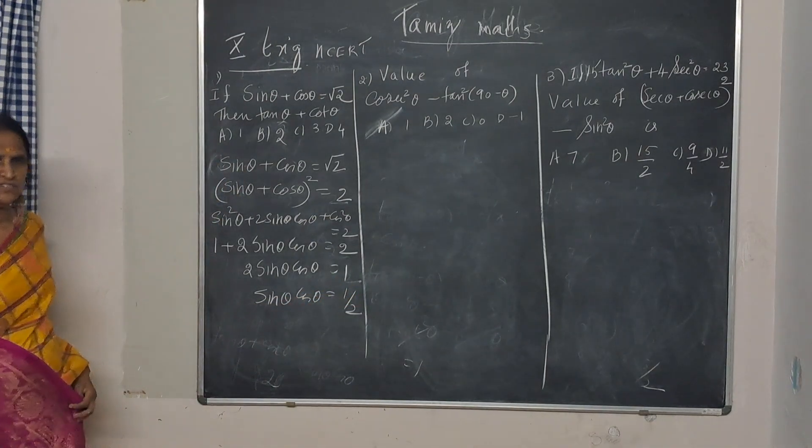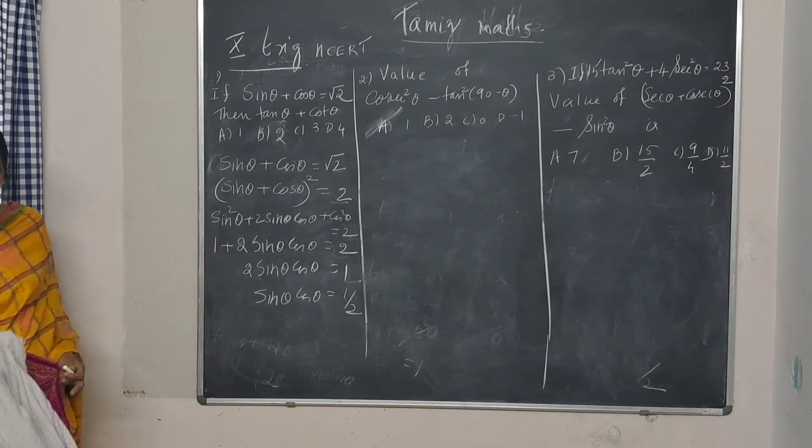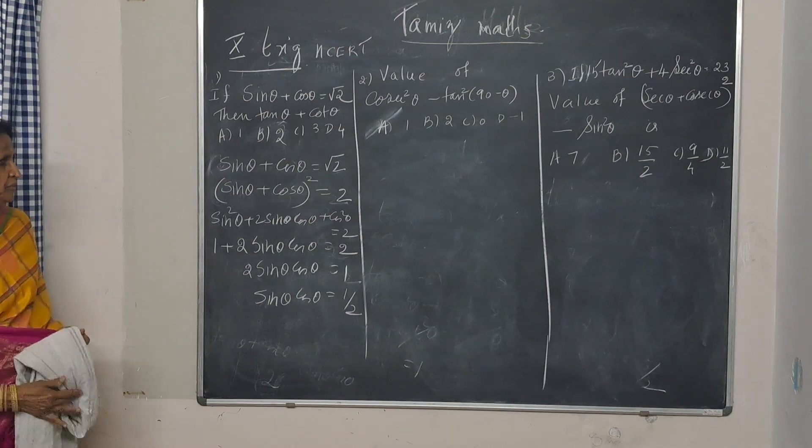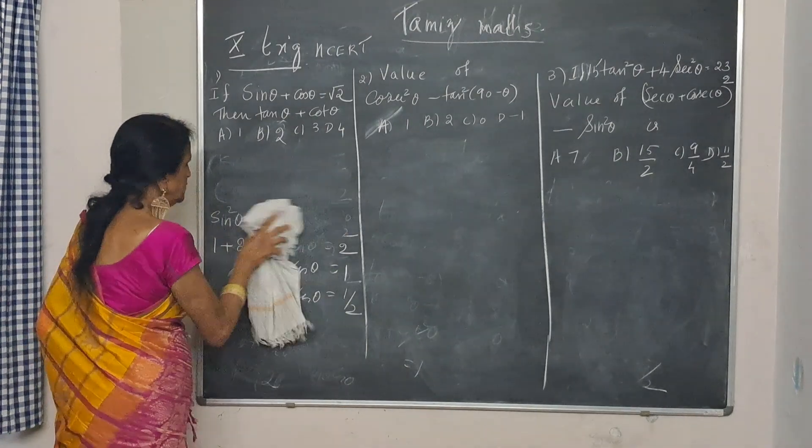So, the value of sin theta cos theta is 1 by 2. Now, we want the value of tan theta plus cot theta. Let's see how much it is.